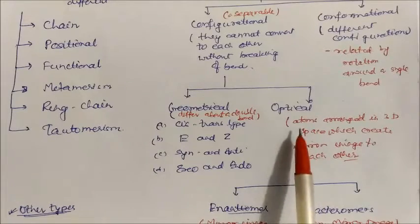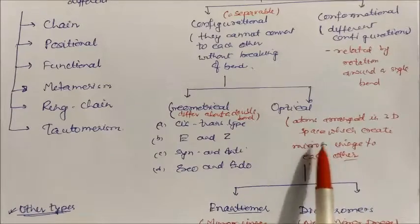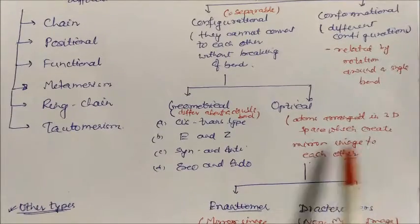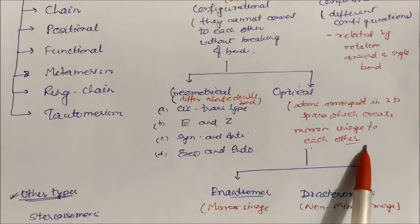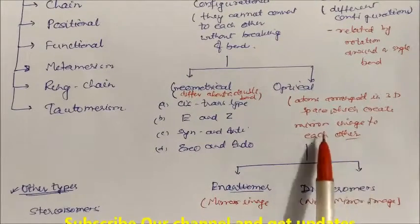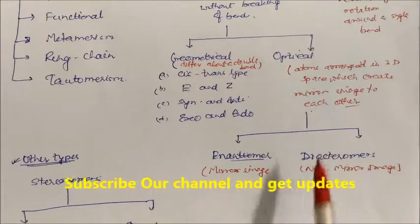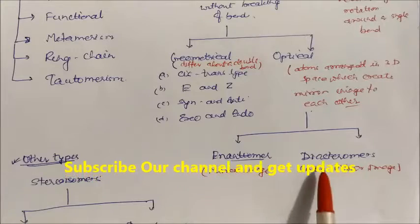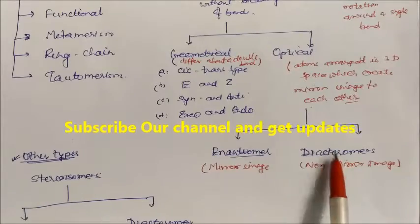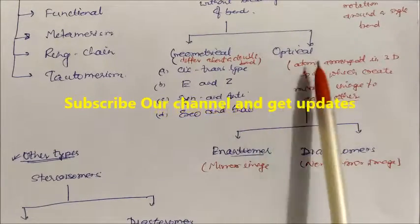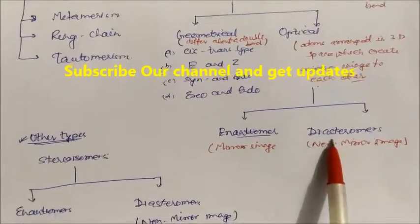In optical isomerism, atoms are arranged three-dimensionally in space creating mirror images of each other — these isomers are mirror images of each other. Under mirror images, one type is an exactly matching mirror image and the second is a non-superimposable mirror image. So under optical isomerism we have two different types of isomers: one is mirror image type and the other is non-mirror image type.